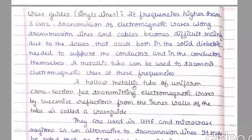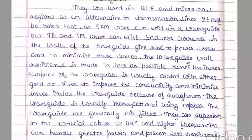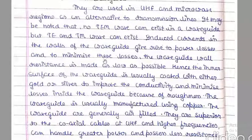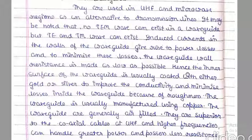A wave guide is a hollow metallic tube with a uniform cross section, through which electromagnetic waves are transmitted via successive reflections from the inner metallic walls. Since gold and silver are very expensive, copper is used for wave guides. Wave guides are generally air-filled. The TM, TE, and TEM modes of wave guides will be discussed in future lectures.